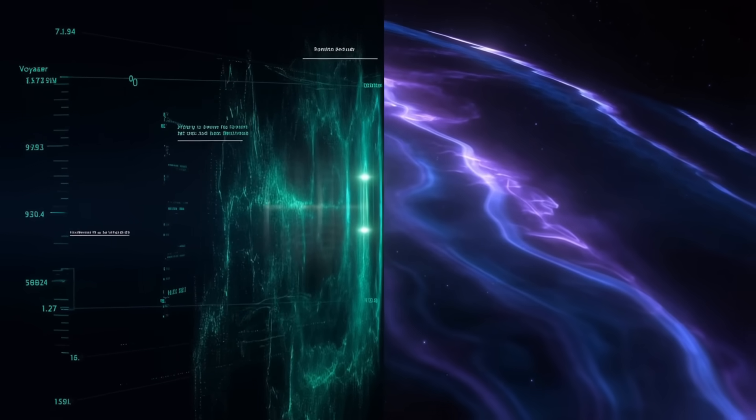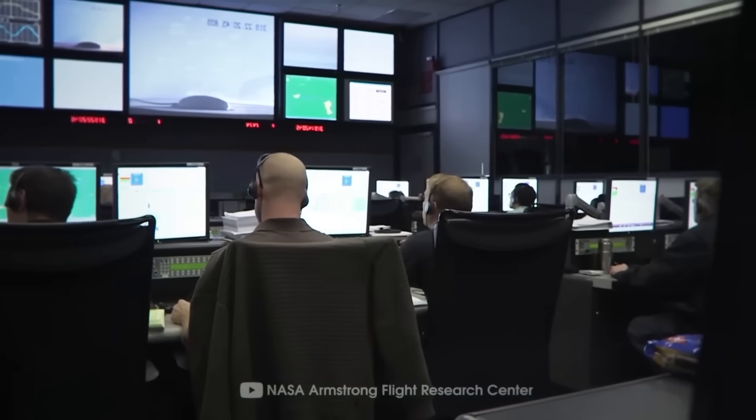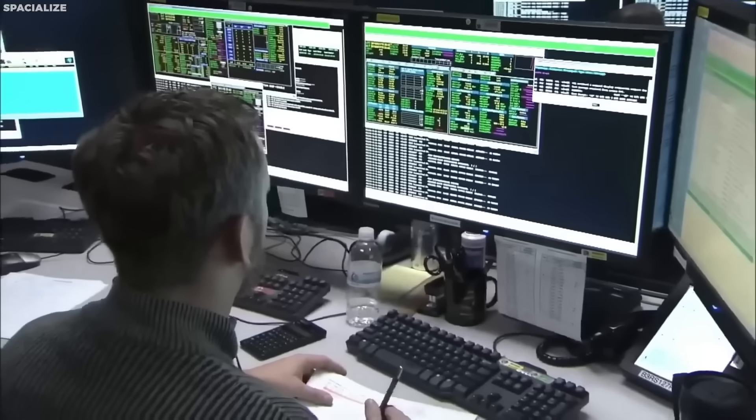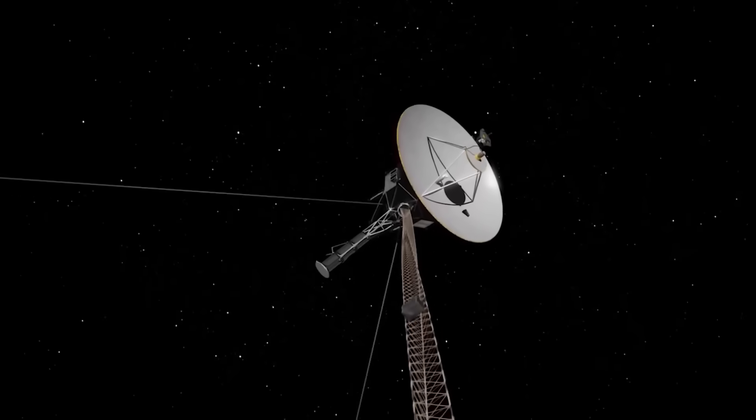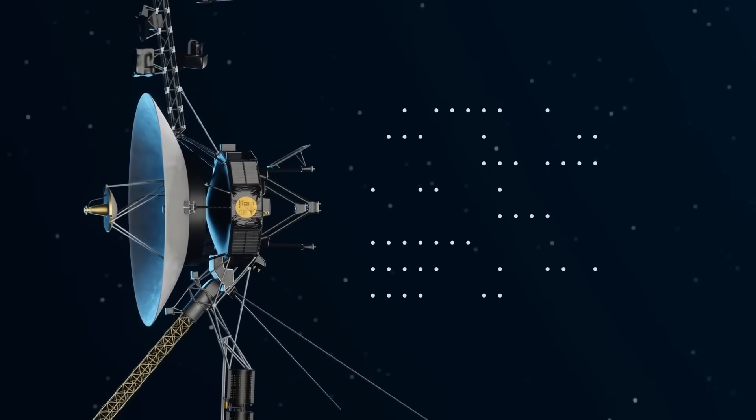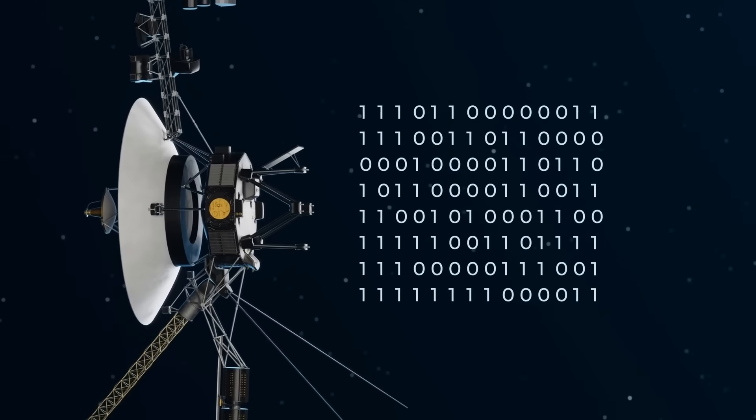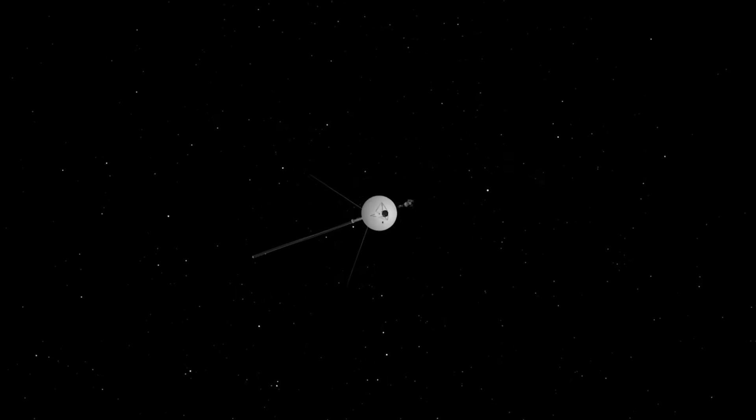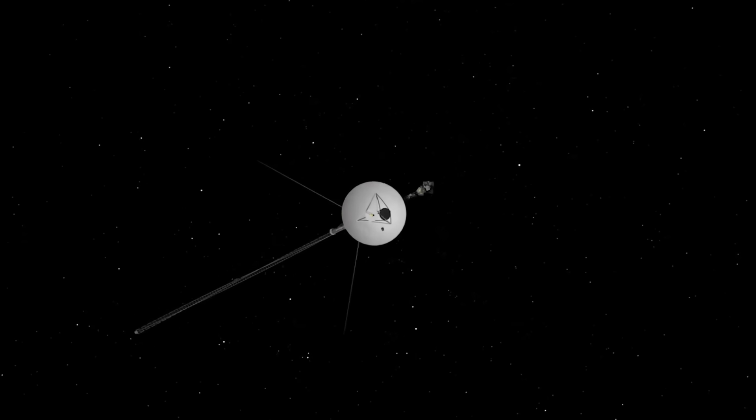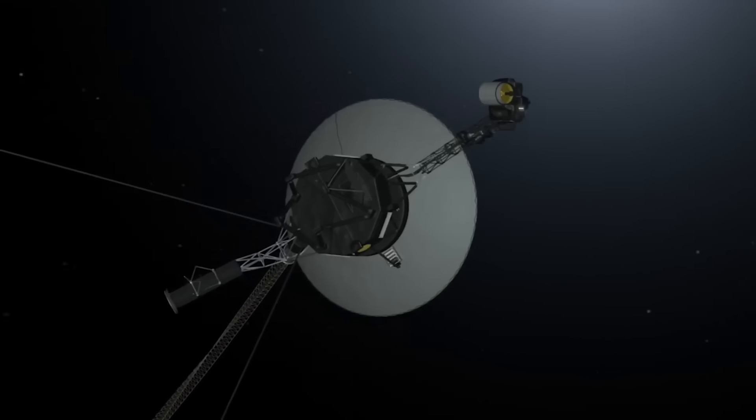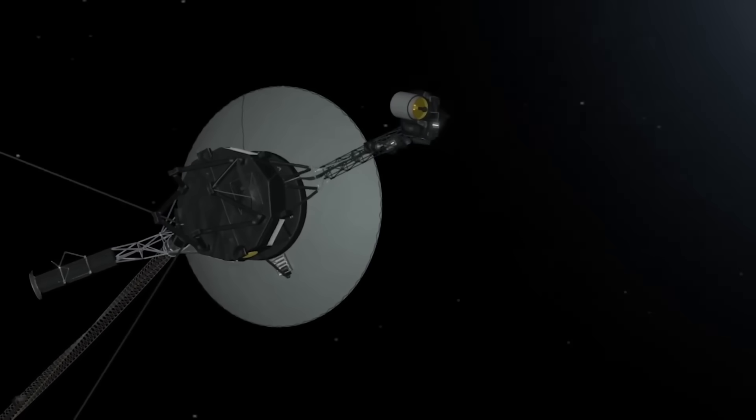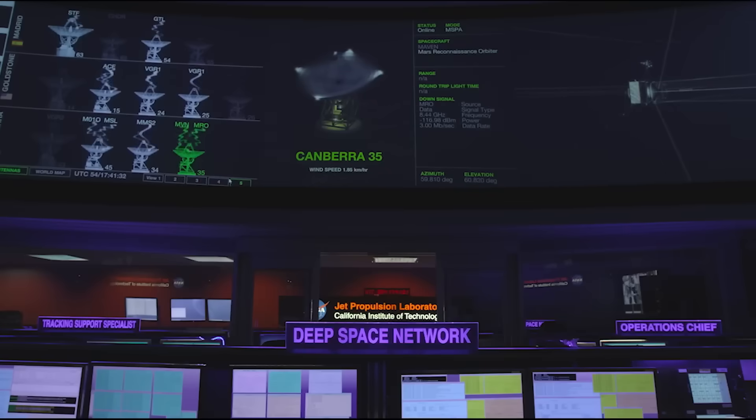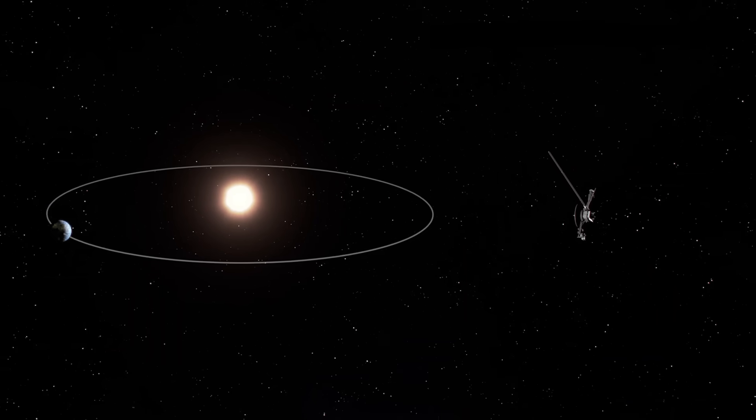In a universe 13.8 billion years old and unimaginably vast, Voyager 1 has traveled just 15 billion miles, barely leaving our cosmic neighborhood. Yet even this short journey has revealed how much we still have to learn. As Voyager's power fades and its voice grows fainter, its legacy of discovery and wonder only grows stronger. This small spacecraft, built with technology less powerful than a modern smartphone, continues to challenge our understanding of reality from the edge of interstellar space.